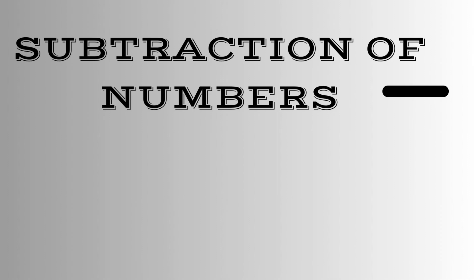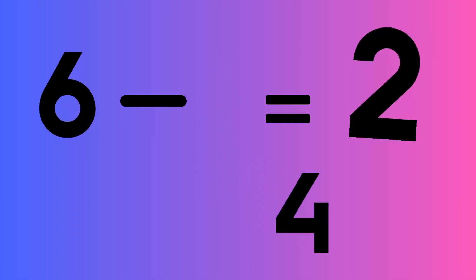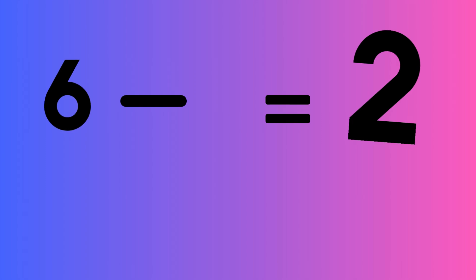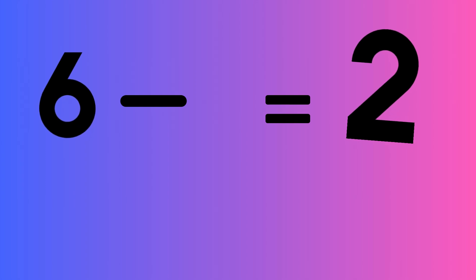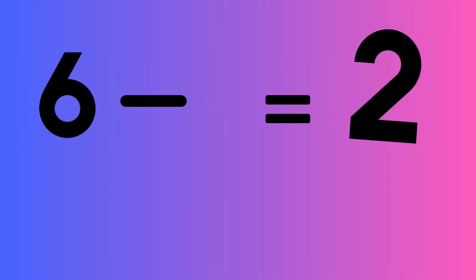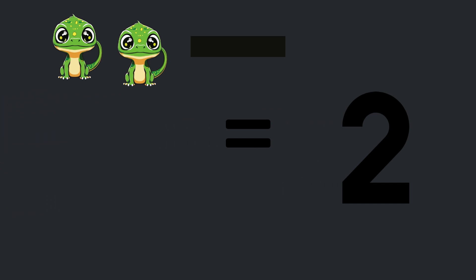Subtraction. Six take away four equals two: six lizards take away four lizards equals two lizards.